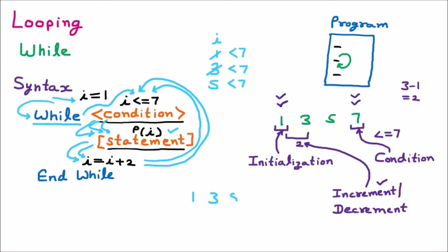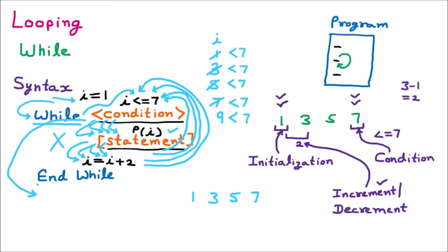Five is printed, then i equals i plus two makes i seven. Condition: seven less than or equal to seven — true, seven is printed. Then i becomes nine. Condition check: is nine less than or equal to seven? No — condition is false. The loop does not go inside; it exits directly to end-while. That is how the while loop works.